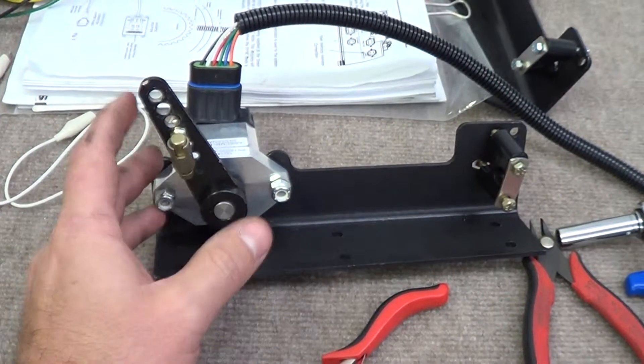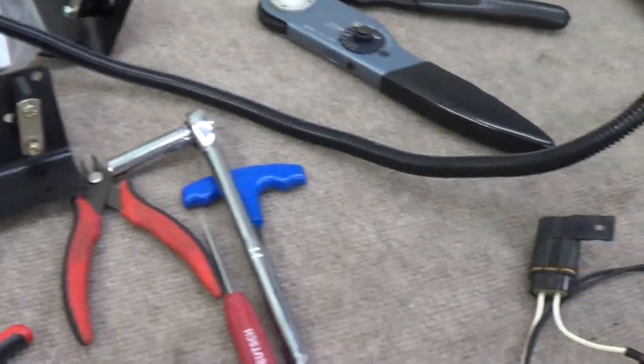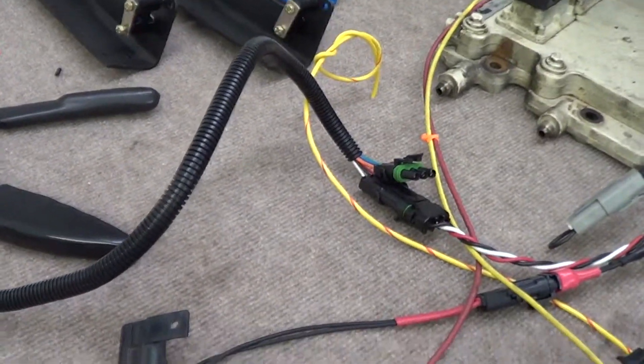Here's our throttle pot here. You can see this is our lever actuator for throttle. That links into the harness that we're making for you and connects right here.